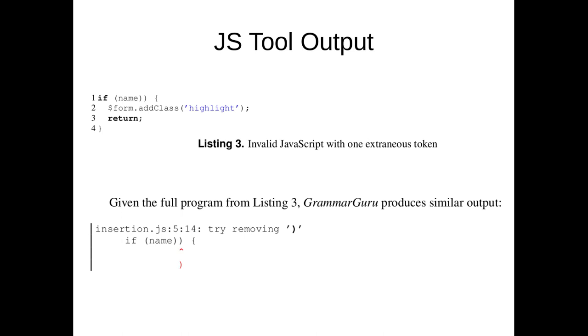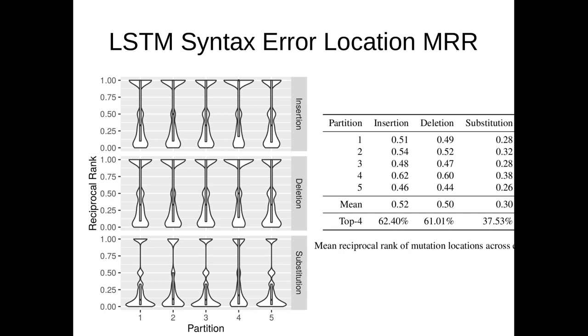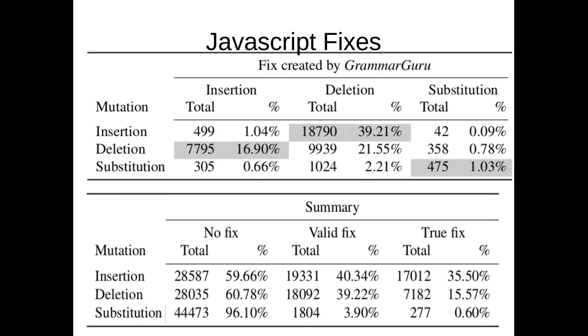So how well does this work? Well, we got an MRR around 0.3 to 0.5 for JavaScript, so that's pretty nice. Typically it works best on insertions. Deletions are harder because the mutation—the fix for a delete is an insert, so you have to actually come up with the right one. And then substitutions, they don't happen a lot.